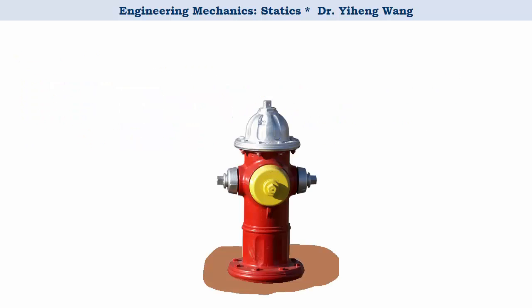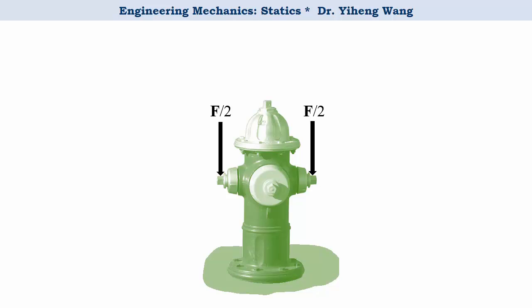Imagine this fire hydrant fixed to the ground, and there's a force F acting on it as shown. From experience we can tell that if we replace this force by these two forces, each with half the magnitude placed symmetrically about the central axis of the hydrant, these two forces will create the same effect as the original F force.